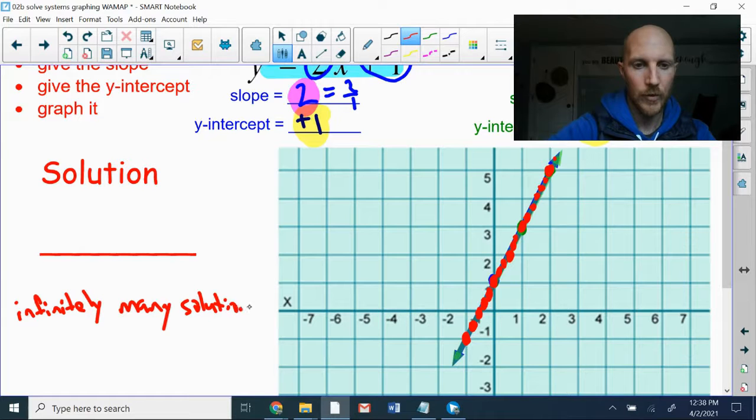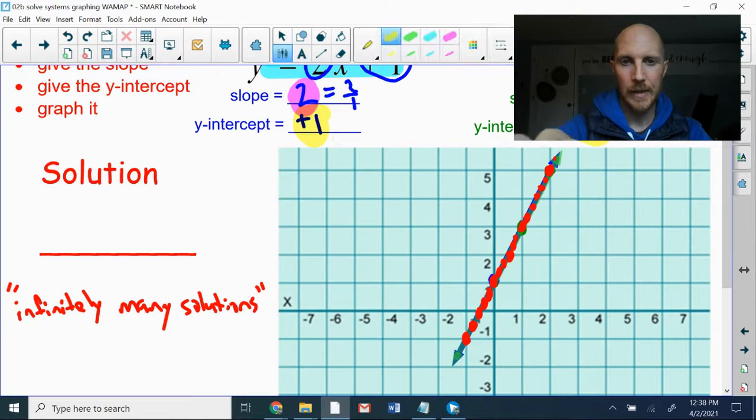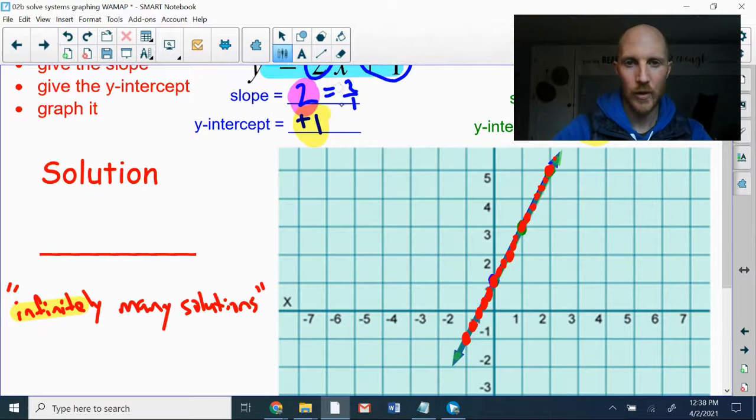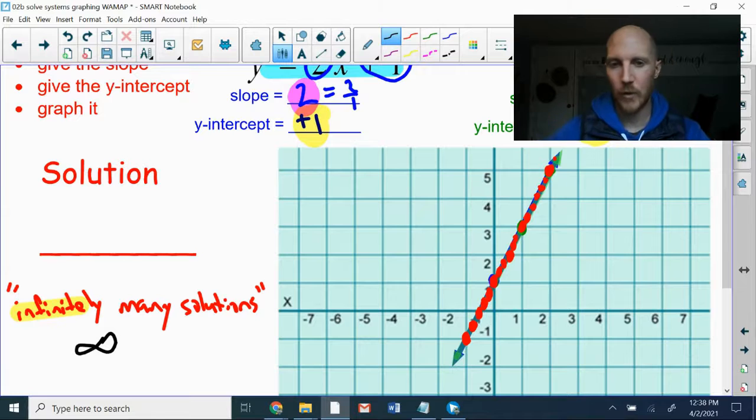Infinitely many solutions. That is the way we express this idea. There are so many points where those two lines touch that we could not ever count them all. And we're just going to use infinite. That is our answer. We're going to write for the solution is the infinity symbol.